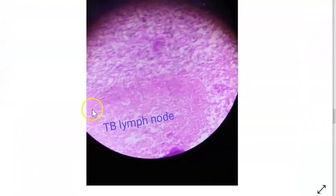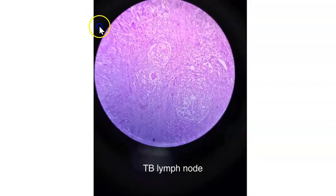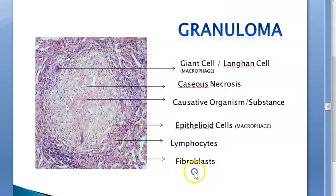Here they are showing a TB lymph node with a granuloma and caseous material. In the lab diagram of a TB lymph node, you can see the granuloma with caseous necrosis in the middle, the causative organism trapped inside, giant cells (Langhans cells), epithelioid cells, lymphocytes, and fibroblasts. This is a granuloma.